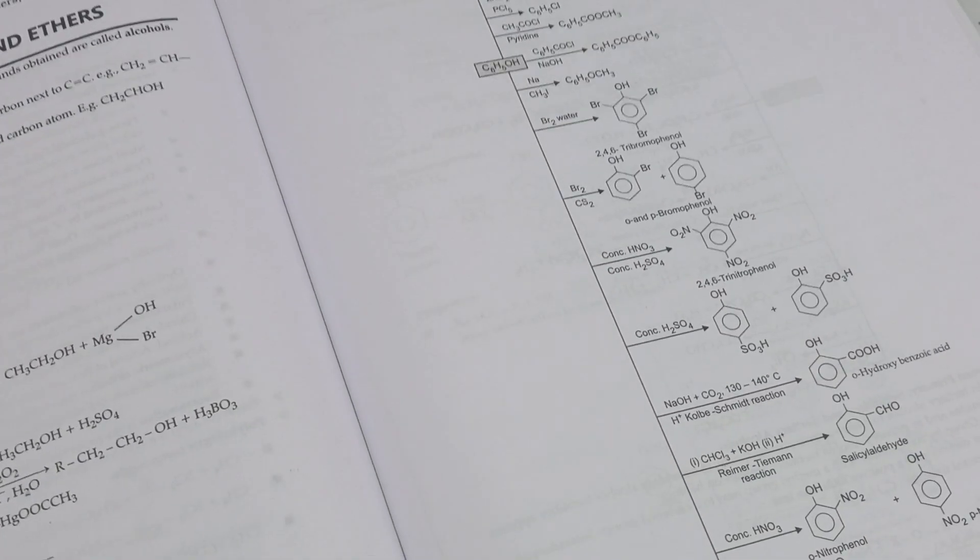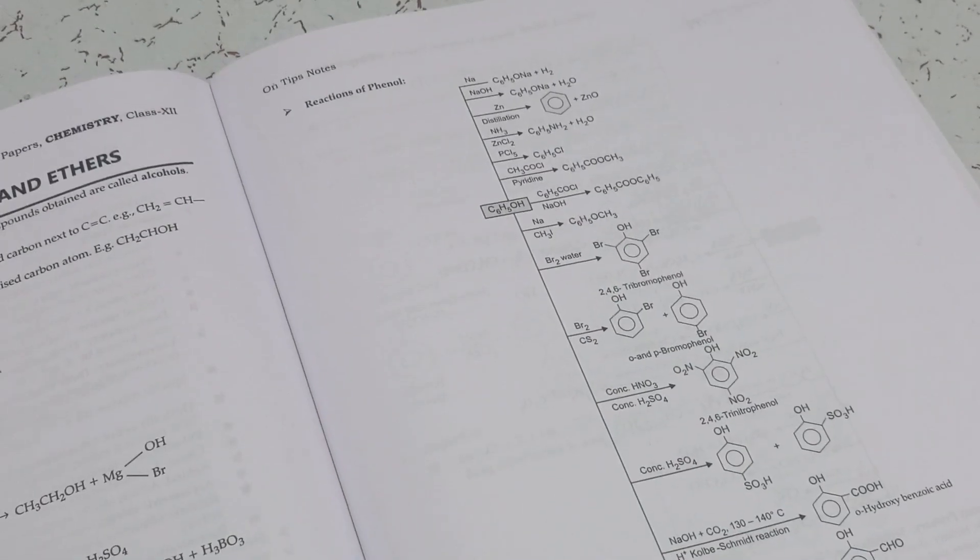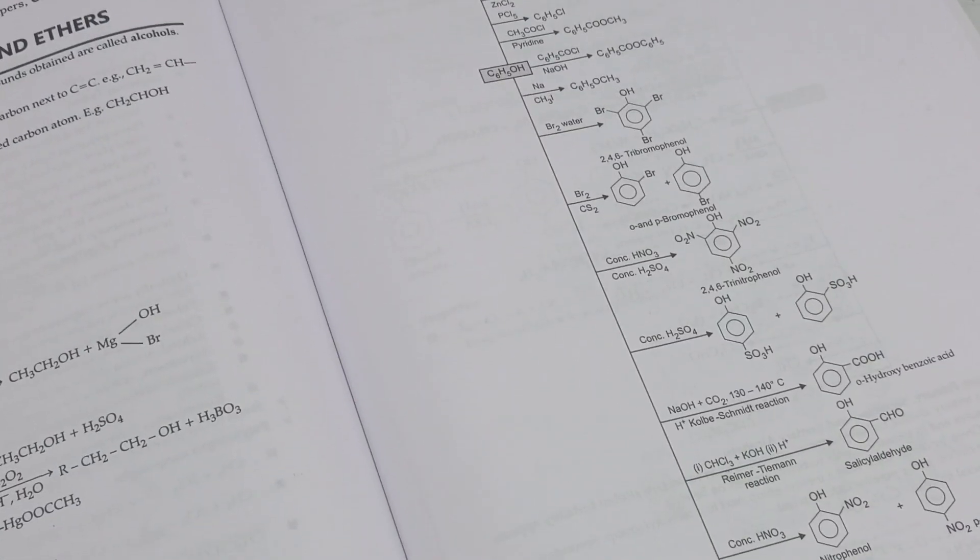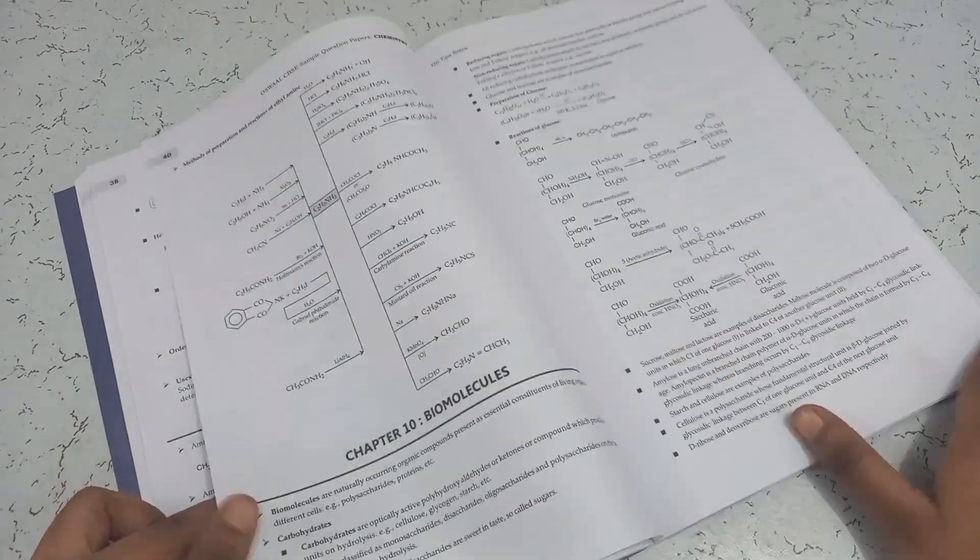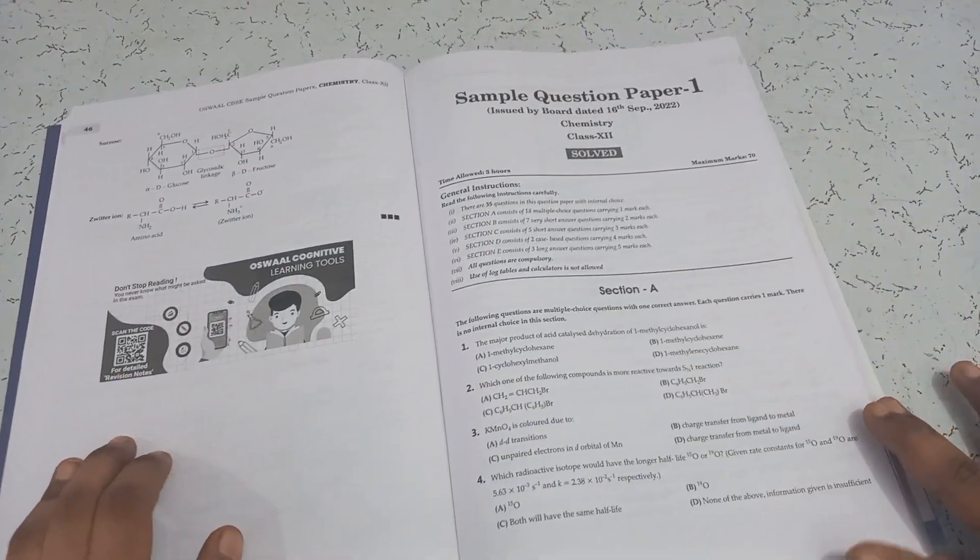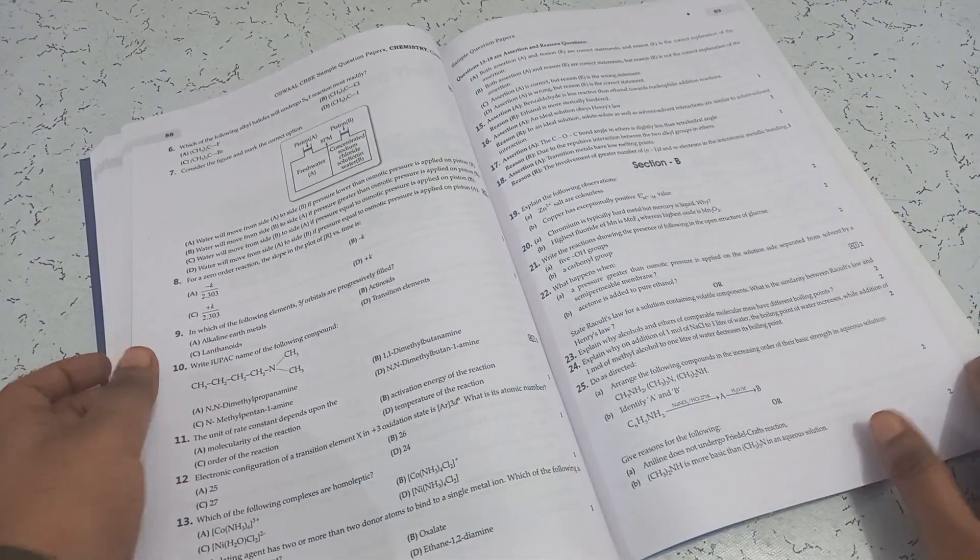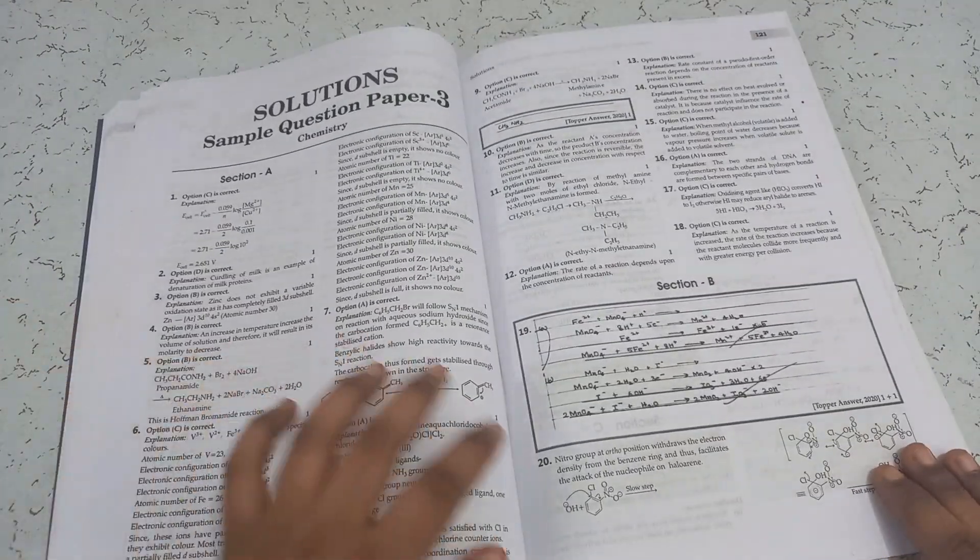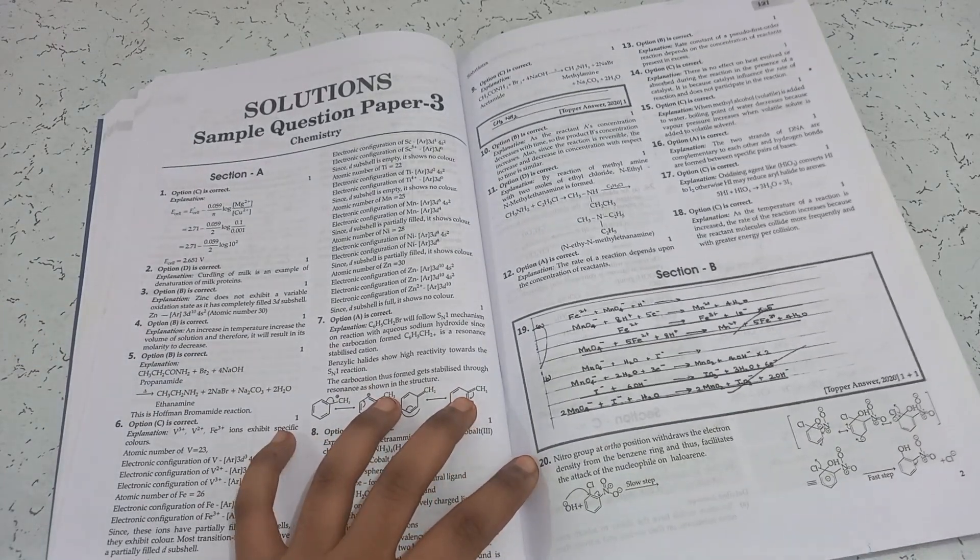Important processes, important nomenclatures which you need to learn in chemistry also provided. Now, the solved sample question papers. Then, unsolved self-assessment papers. At the end of each, it contains solutions for that sample paper.